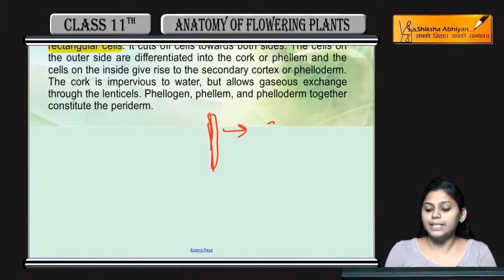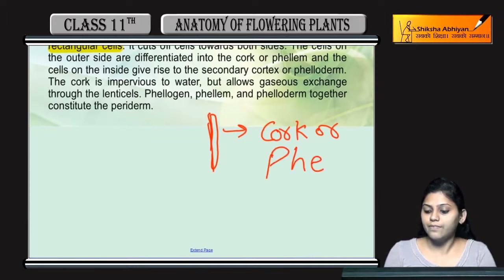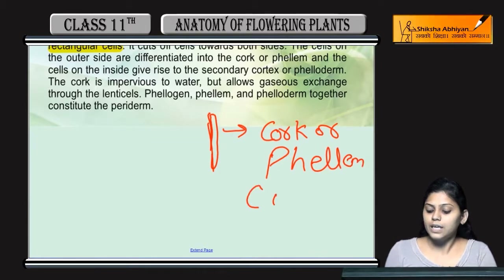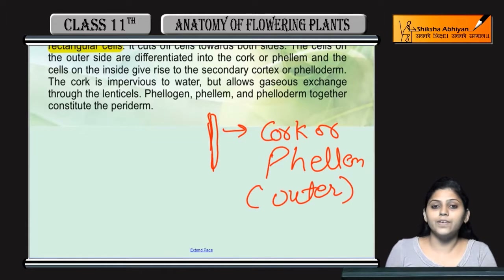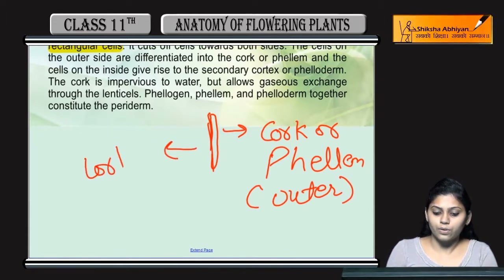The outer side is called the cork, which is called the phellem. Whereas the inner side is called the pheloderm, which lies towards the cortex.